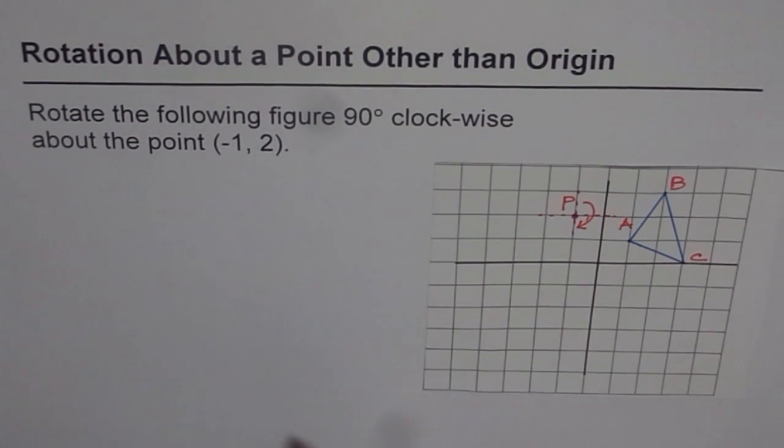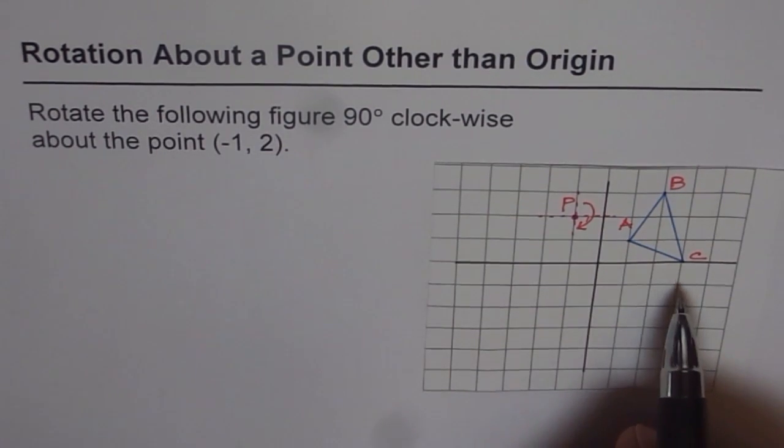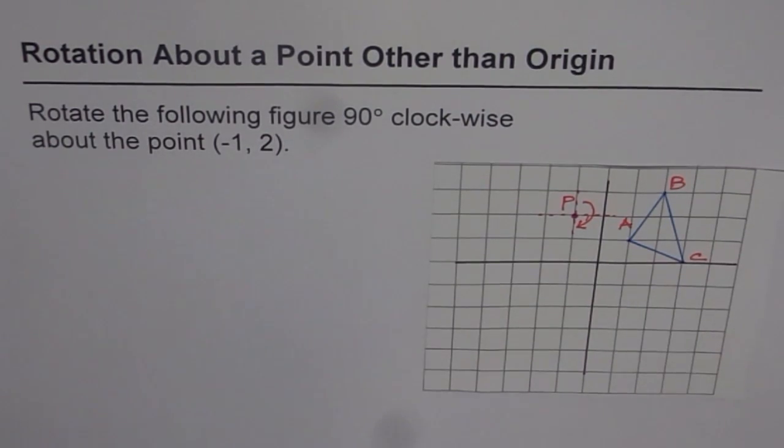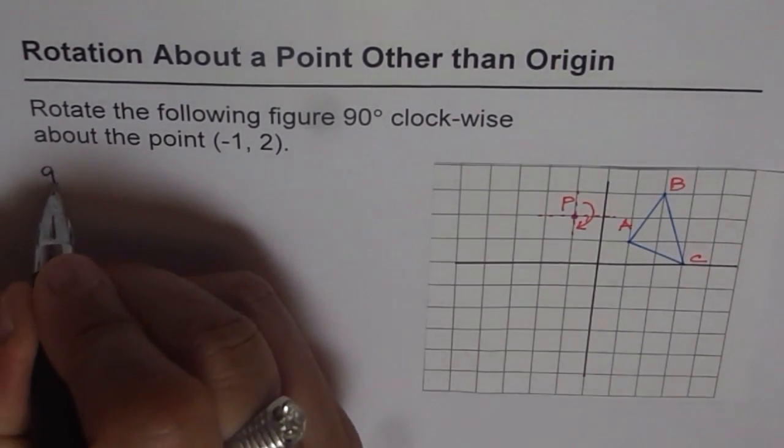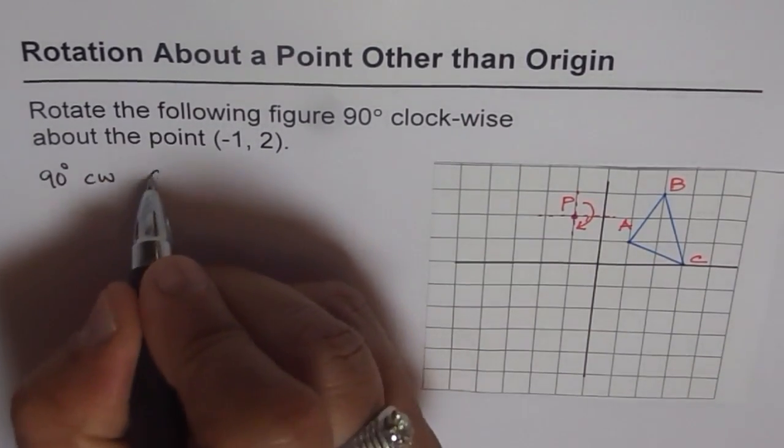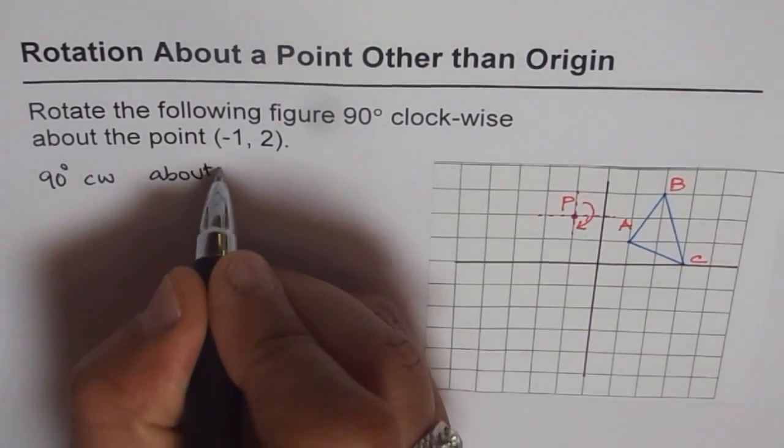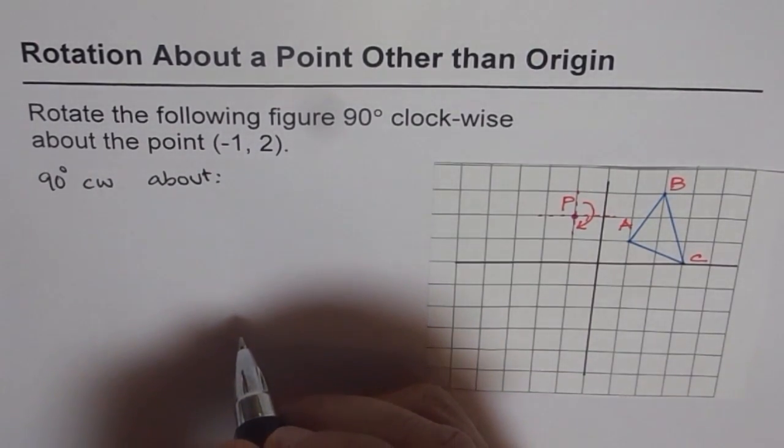If you recall, when we rotate 90 degrees clockwise about origin, then what happens to x and y points? Well, if we do 90 degrees clockwise about origin, then what happens to x and y points?